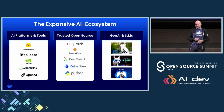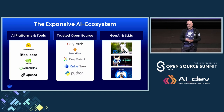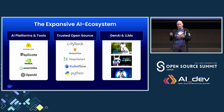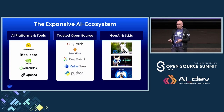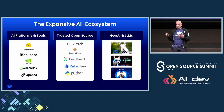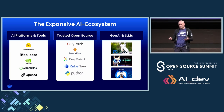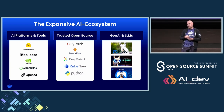There is a lot of movement around AI and machine learning in today's world. What is helpful is to think about three categories. The first is AI platforms and tools — companies like Hugging Face, NVIDIA, and OpenAI. They are building infrastructure, platforms, and tools that help you scale and run your AI applications.